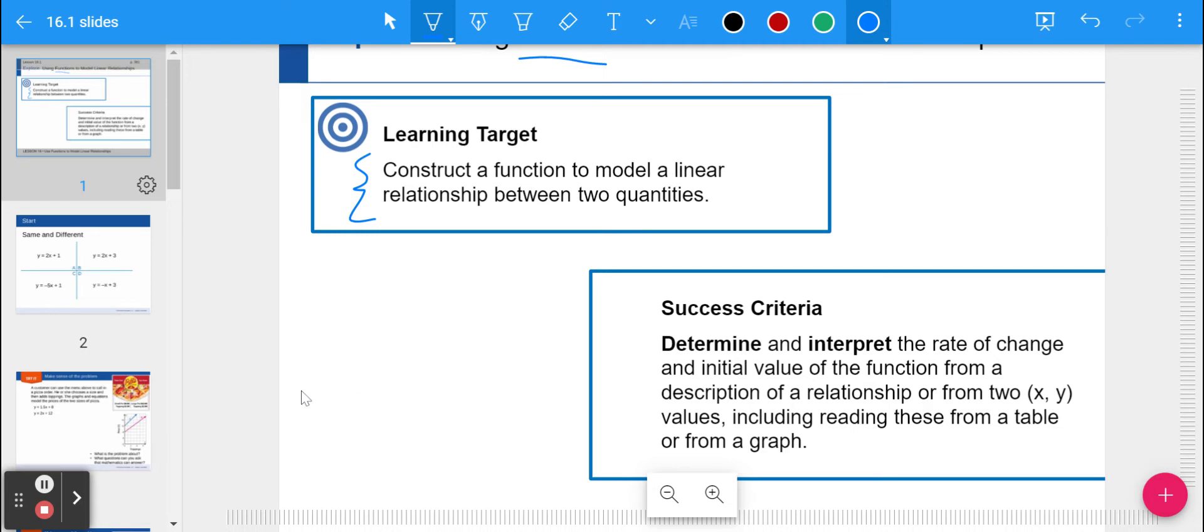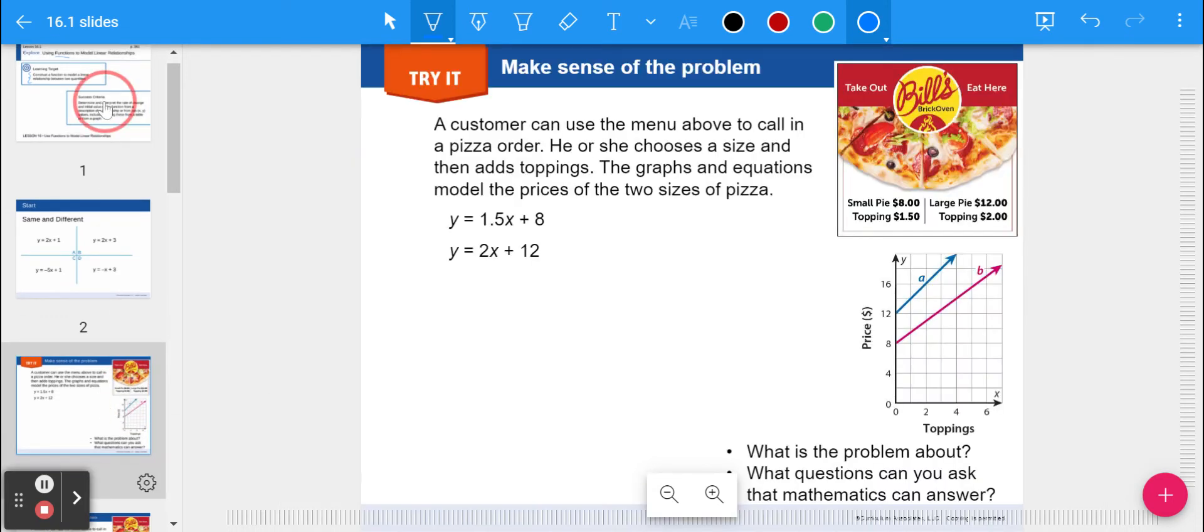We're going to jump straight to page 361. Here's the problem of the day. A customer can use the menu at Bill's Brick Oven Pizza to call in a pizza order. He or she chooses a size and then adds toppings. The graph and equations model the prices of the two sizes of pizza, so you can look at both the equations or the graph or both.